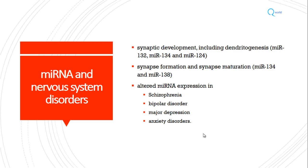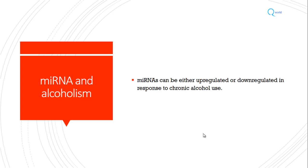Synaptic development, synapse formation, and synapse maturation all involve micro RNA. Altered micro RNA expression can lead to various nervous system disorders like schizophrenia, bipolar disorder, major depression, and anxiety disorders. You will be surprised to know that people who engage in chronic alcohol use — alcoholics — have either upregulated or downregulated levels of certain micro RNAs. So it also plays a role in addiction.